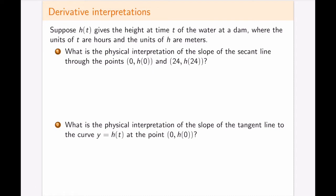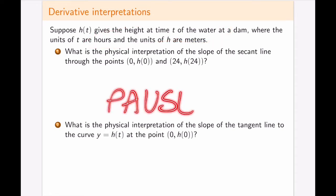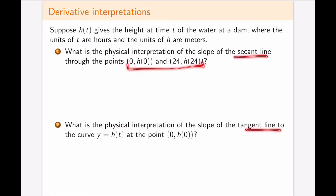In terms of general interpretations of derivatives, consider a function h(t) giving the height of water at a dam at time t, where t is in hours after midnight and h is in meters. The two questions are: what is the physical interpretation of the slope of a secant line, and what is the physical interpretation of the slope of a tangent line for this setup? Pause and write a sentence for each.